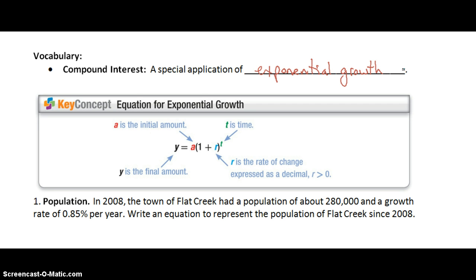We'll talk about compound interest after we take a look at our equation for exponential growth. In our equation for exponential growth we have A is going to be our initial amount, so that's our first amount that we start with. If we're working with money that's going to be our investment. Y is going to be our final amount so that's how much we end up with at the end after the growth has occurred.